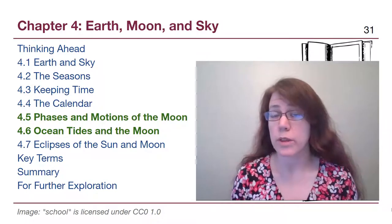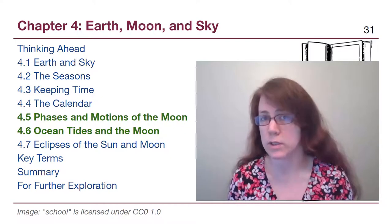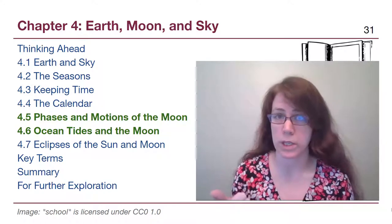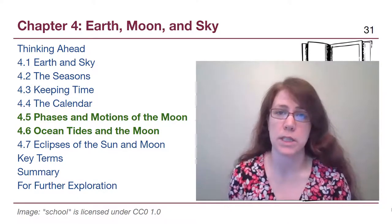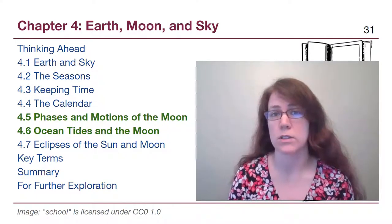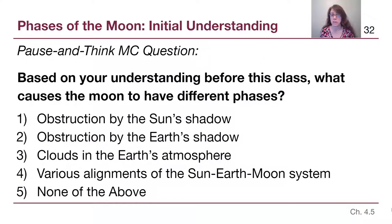I want to start out with a check to see where our current understanding is, because phases of the moon — very similar to seasons — is both taught in K through 12 curriculum and has a lot of misconceptions in the general population. We want to make sure to confront and fix any prior misunderstanding. So let's start with a pause and think question: based on your prior understanding, what causes the moon to have different phases?